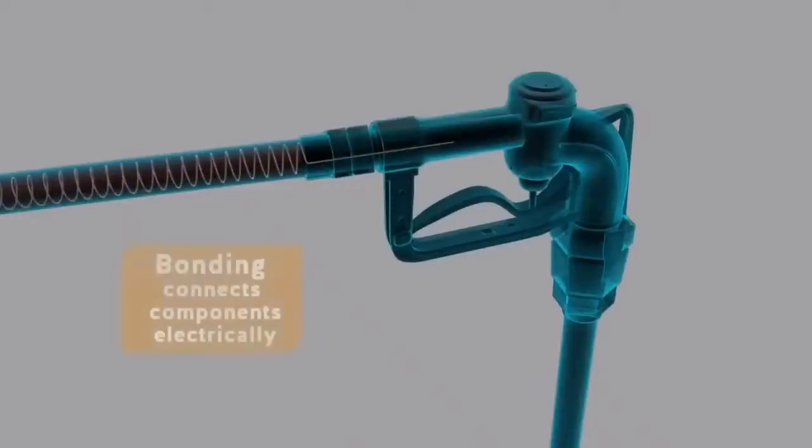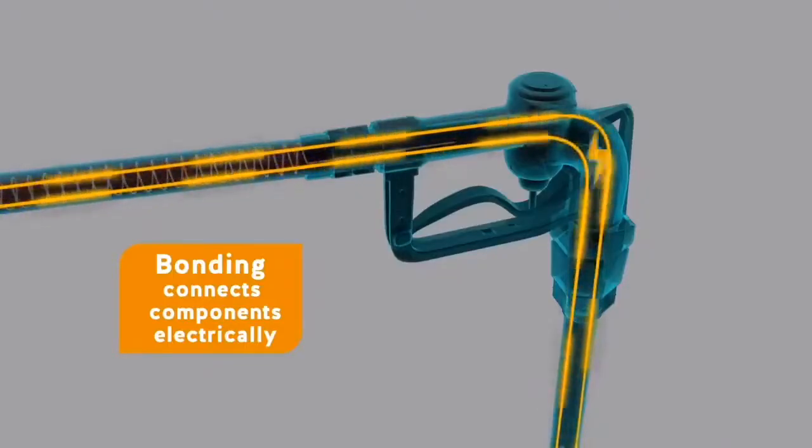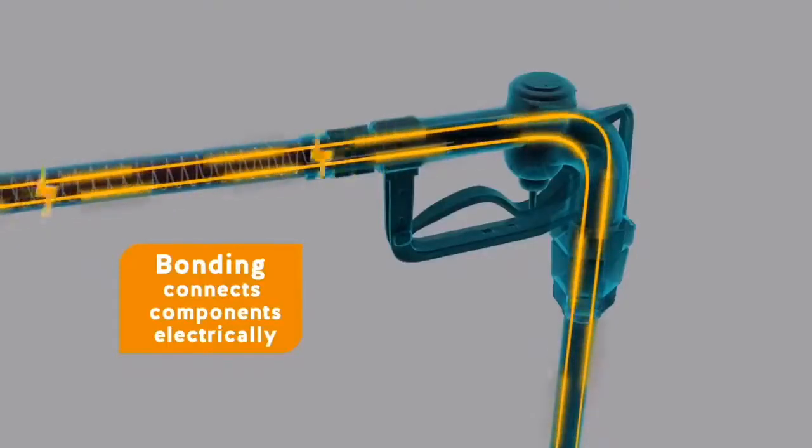Bonding uses a conductive material, such as wire, to connect components such as the pump, hoses, and nozzles in a fuel delivery system. This prevents sparks by keeping the charge between components the same.